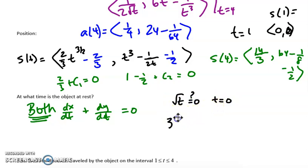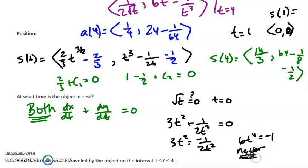Separately, I need dy/dt to equal 0. So that's 3t² + 1/(2t²) must equal 0. So let's go ahead and solve this to get 3t² equals -1/(2t²). And then I cross multiply to get 6t⁴ equals -1. Well, as you know, when I raise something to an even exponent, I cannot get out a negative number. So this never happens.